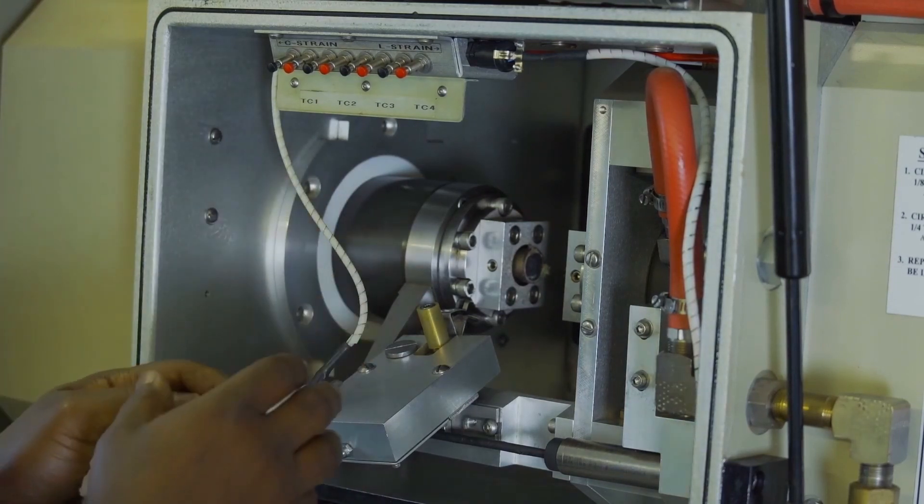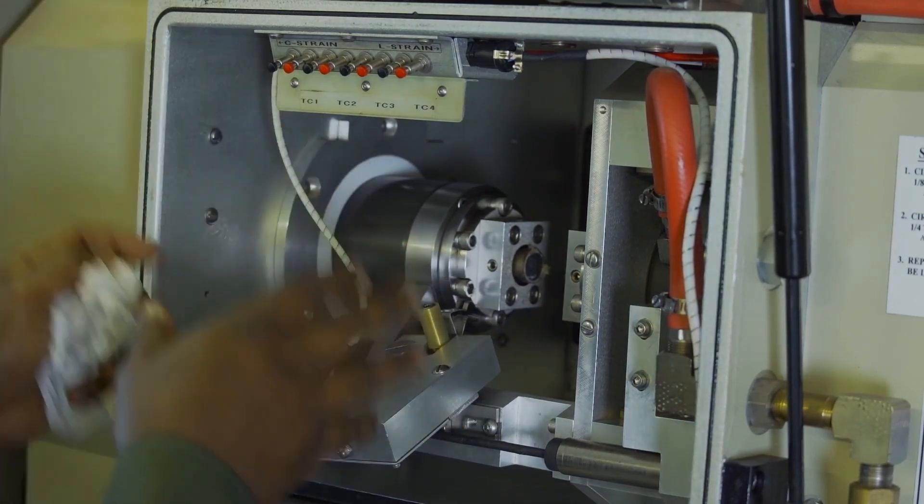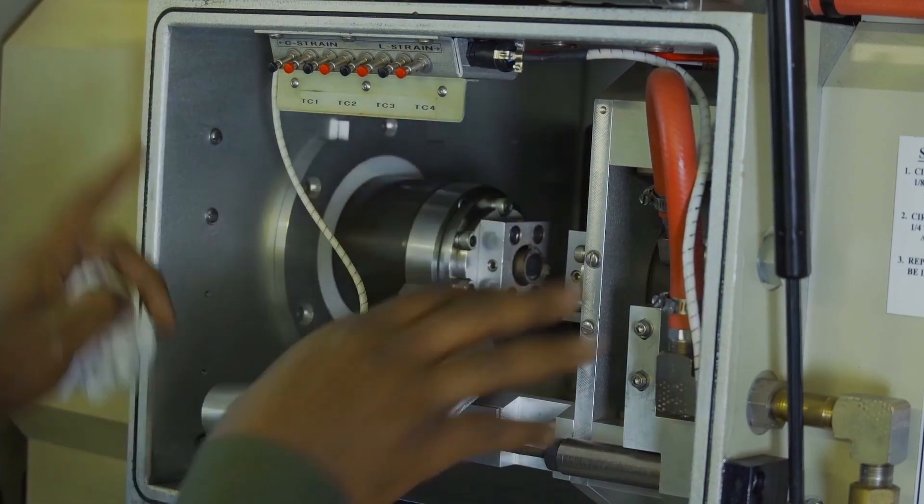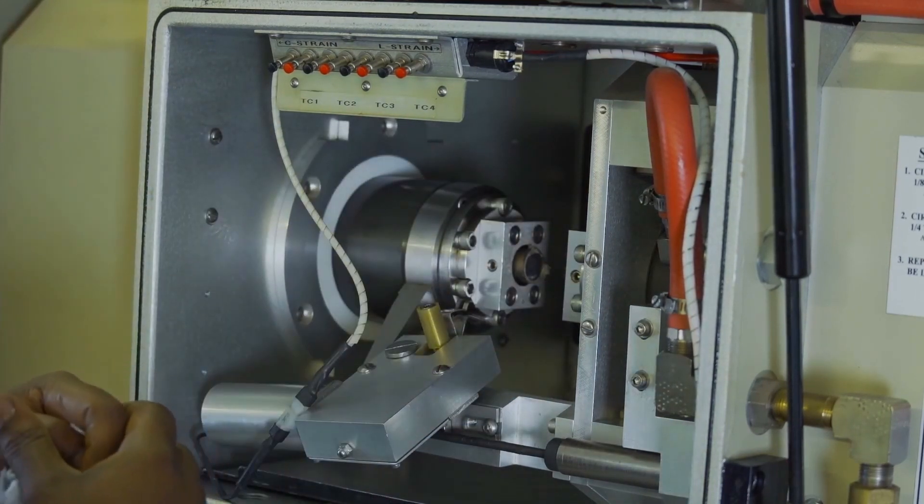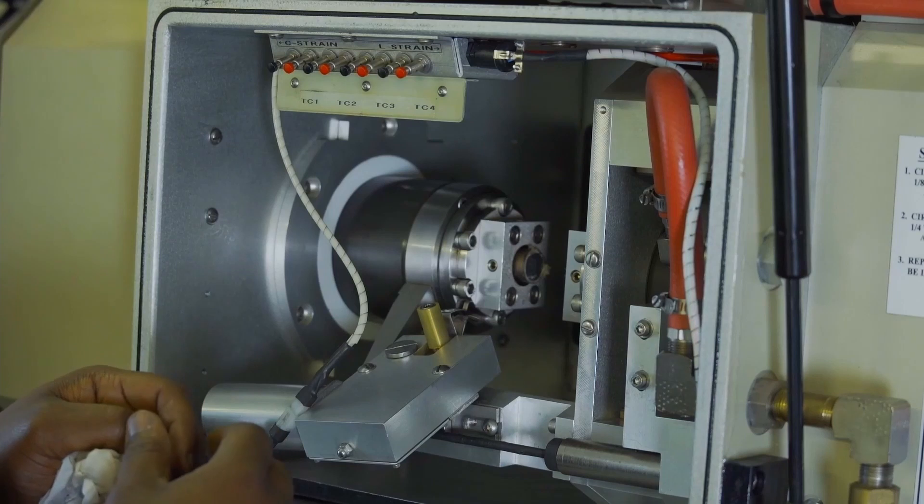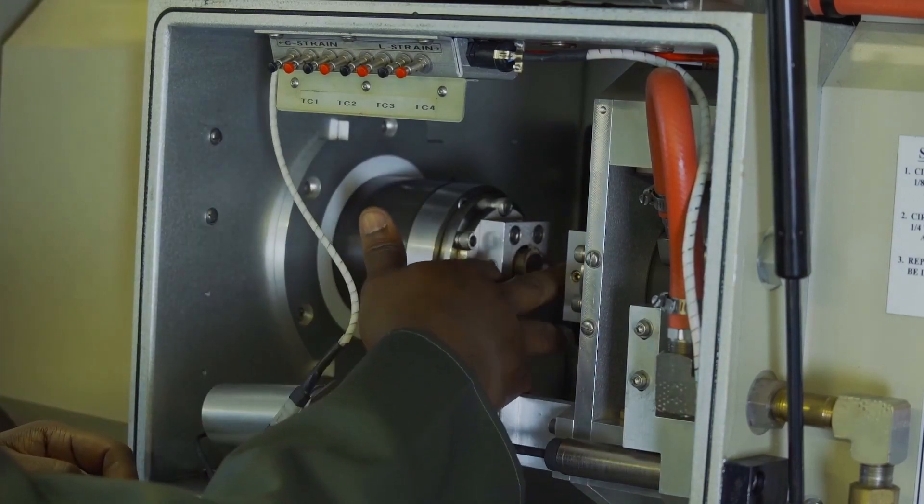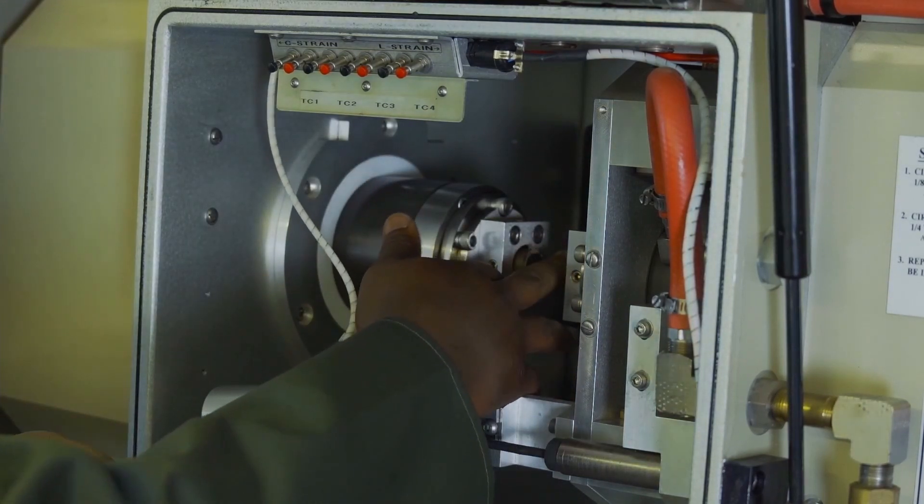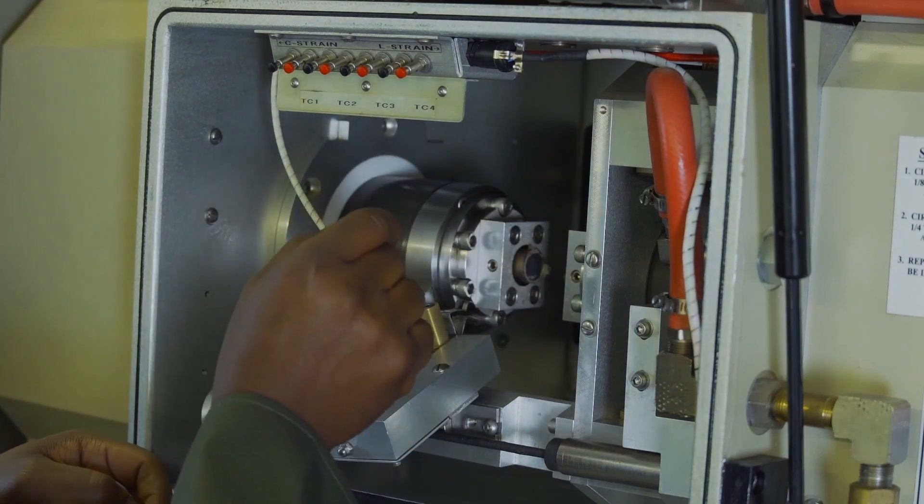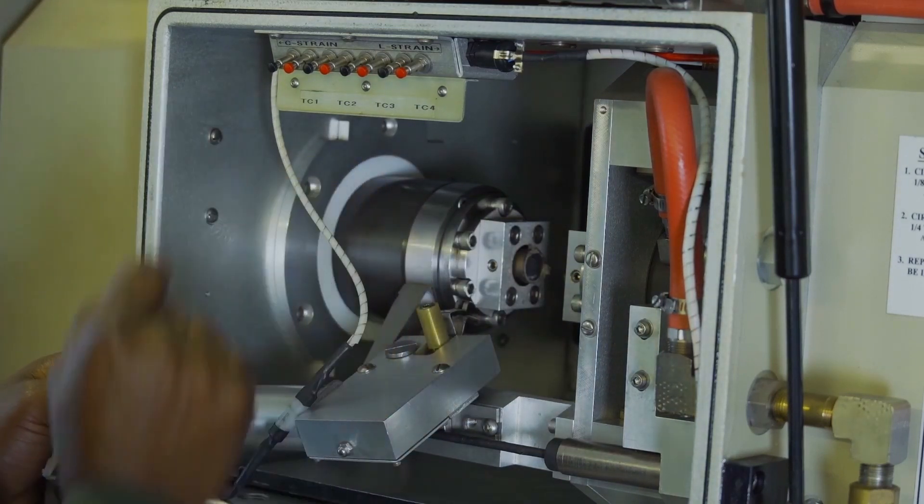The accessories that come with this setup for this test include the ISO-T anvils that you can see here. The Gleeble uses these to compress the flow stress specimen or sample.